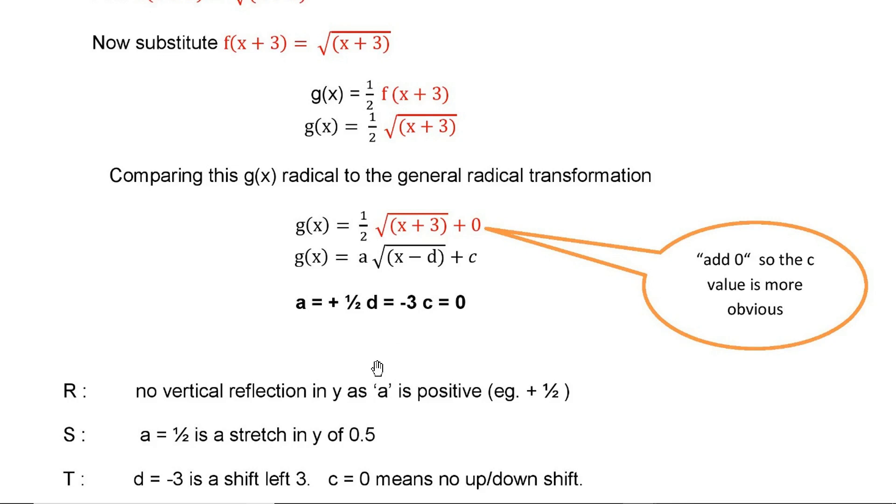Now RST. Let us find out RST. a is ½. Because it is plus, there is no vertical reflection in y. But since a is positive, y has a which is positive. Since we have the scaling, a is ½, then we have 0.5, so it's stretching in y. a equals ½, so it is stretching in y of the value 0.5.